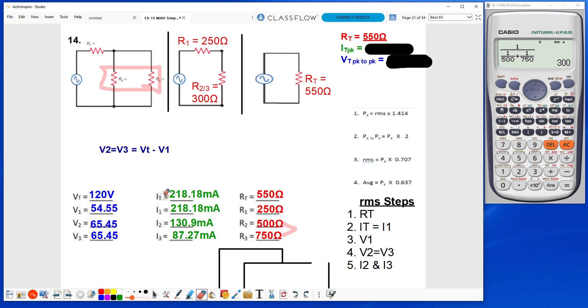I need my IT peak, I have my IT RMS of 218.18 milliamps. So I take the 218.18 times 1.414, I know the answer is